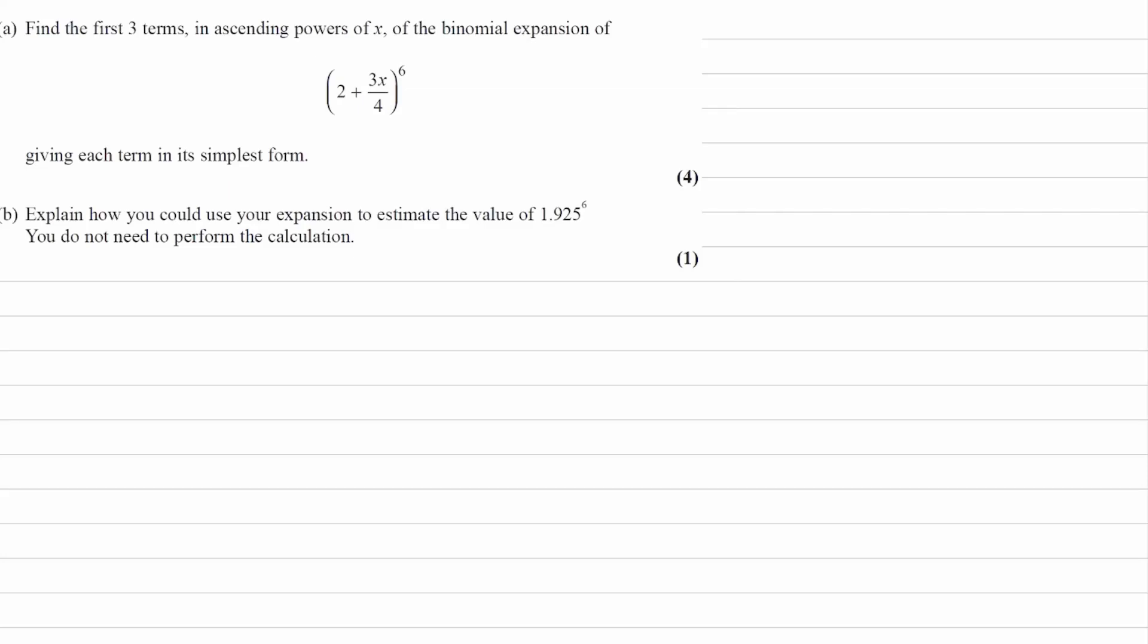Find the first three terms in ascending powers of x of the binomial expansion of 2 plus 3x over 4 to the power of 6.